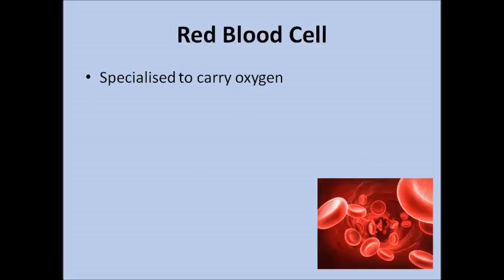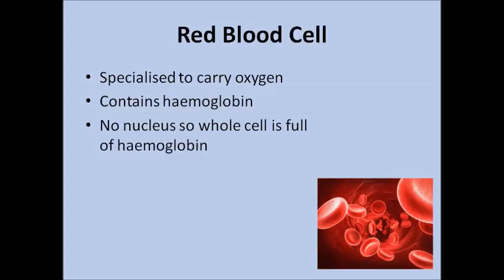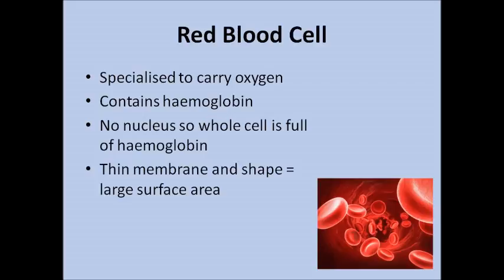Red blood cells are specialised to carry oxygen. They contain a protein called haemoglobin, which actually binds to the oxygen. Red blood cells also have no nucleus, so the whole cell can be full of haemoglobin and carry as much oxygen as possible. They also have a very thin membrane so lots of oxygen can diffuse across very quickly, and they're shaped almost like a Refresher sweet — there's a little dimple in the red blood cell, again making the surface area larger, allowing lots of oxygen to be contained within it.